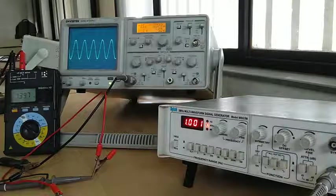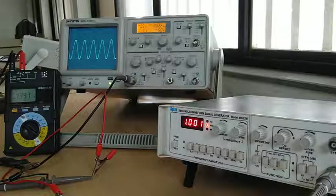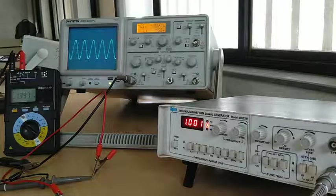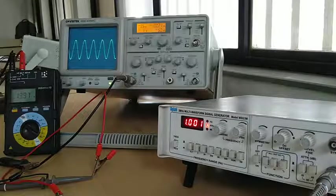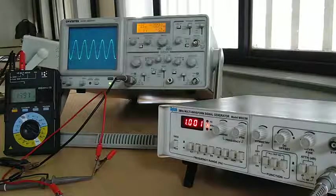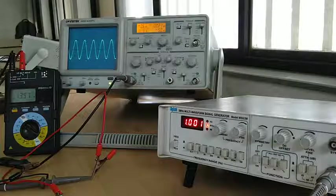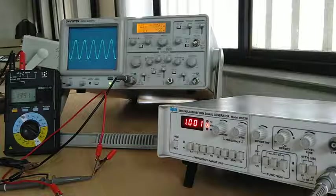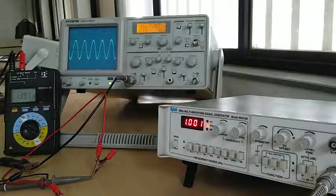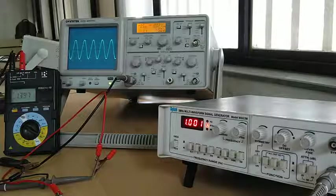We know the equation for percentage error: it equals measured value minus actual value, divided by actual value, multiplied by 100. If I substitute all the values, percentage error equals 1.344 minus 1.397, divided by 1.397, multiplied by 100. After calculation, we get the percentage error in the measurement of the AC voltage.